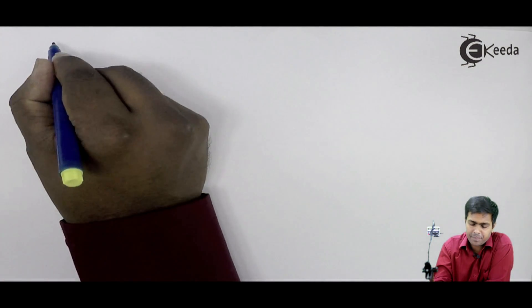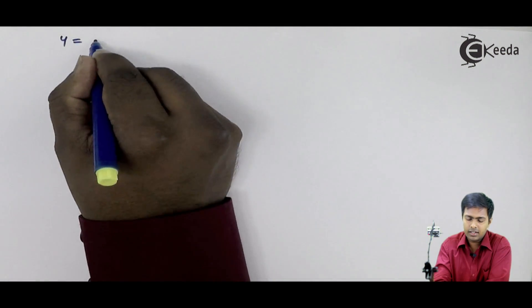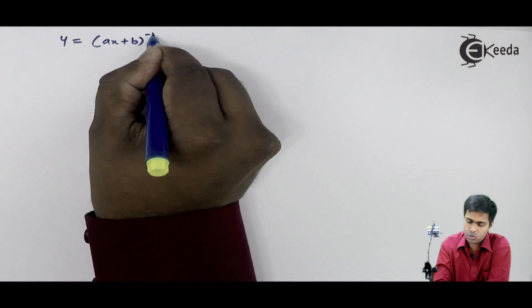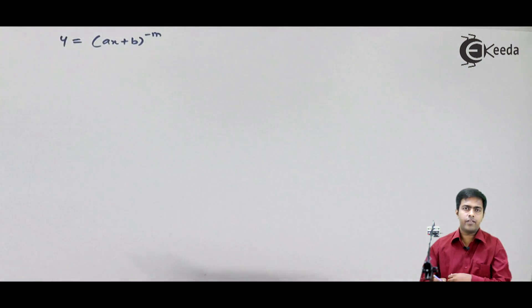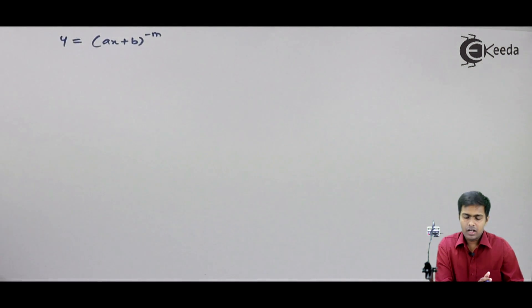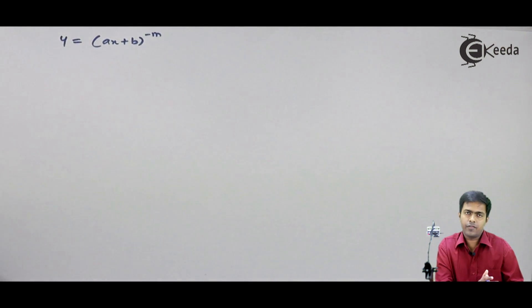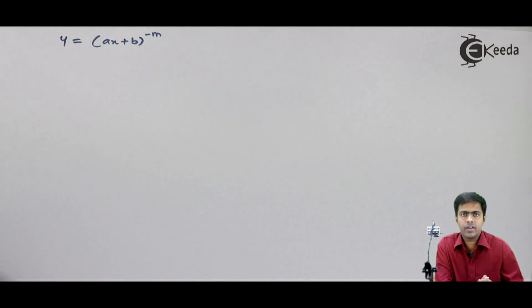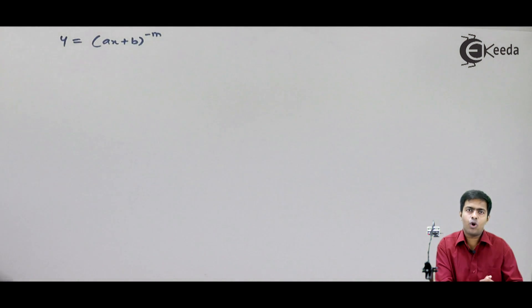Hi friends. In this video we are going to see the nth derivative of some more functions. Let's take an example: if y is equal to (ax + b) raised to minus m, then what is the nth derivative of this? To find the nth derivative we are going to follow one approach — we will find the first derivative y1, second derivative y2, then third derivative y3, and from these first three derivatives we will predict what yn could be.